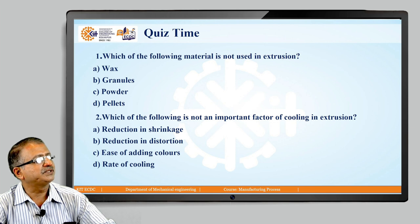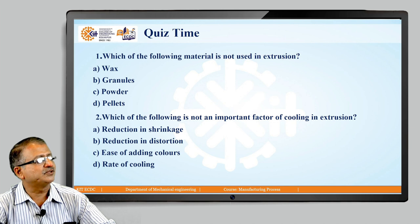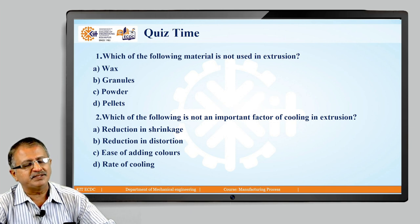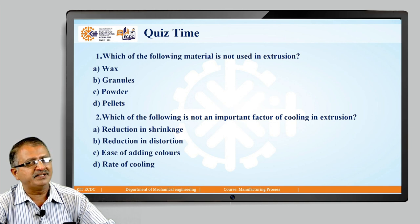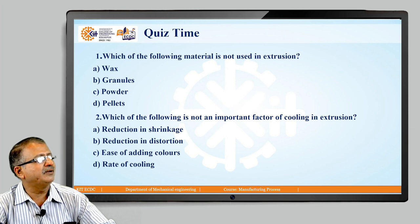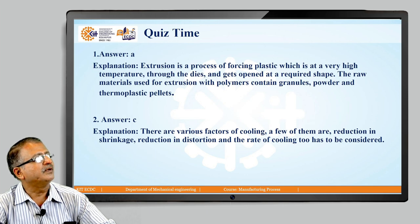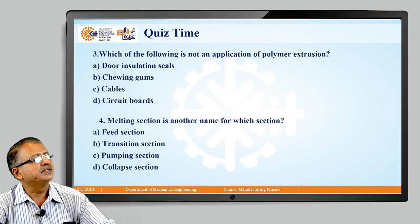Question 2: Which of the following is not an important factor of cooling in extrusion? Options: reduction in shrinkage, reduction in distortion, ease of adding color, and rate of cooling. The answer is C — ease of adding color has nothing to do with the cooling process; all three other parameters are related to cooling.